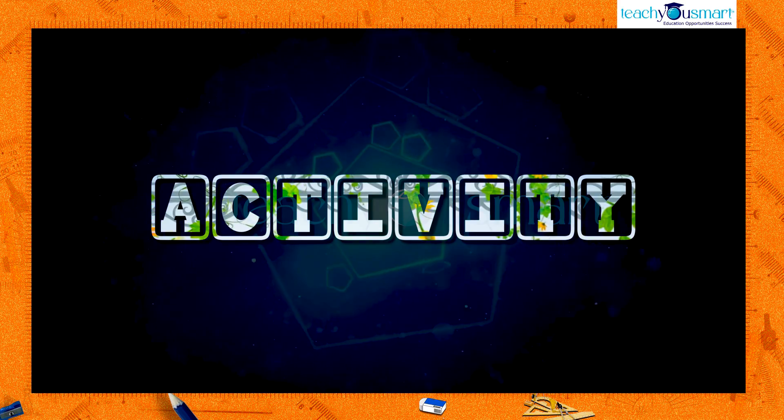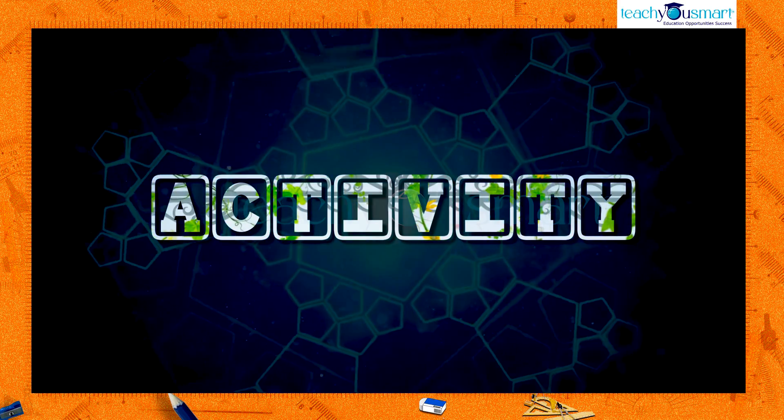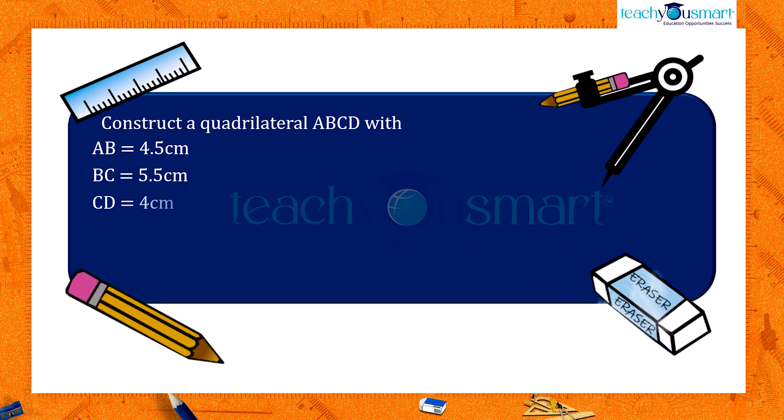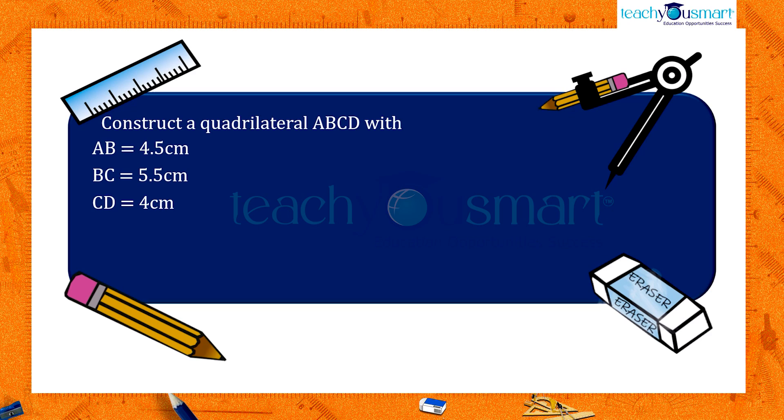Let's check how much you understood by doing an activity. Construct a quadrilateral ABCD with AB equals 4.5 centimeters, BC equals 5.5 centimeters, CD equals 4 centimeters, AD equals 6 centimeters, and AC equals 7 centimeters.